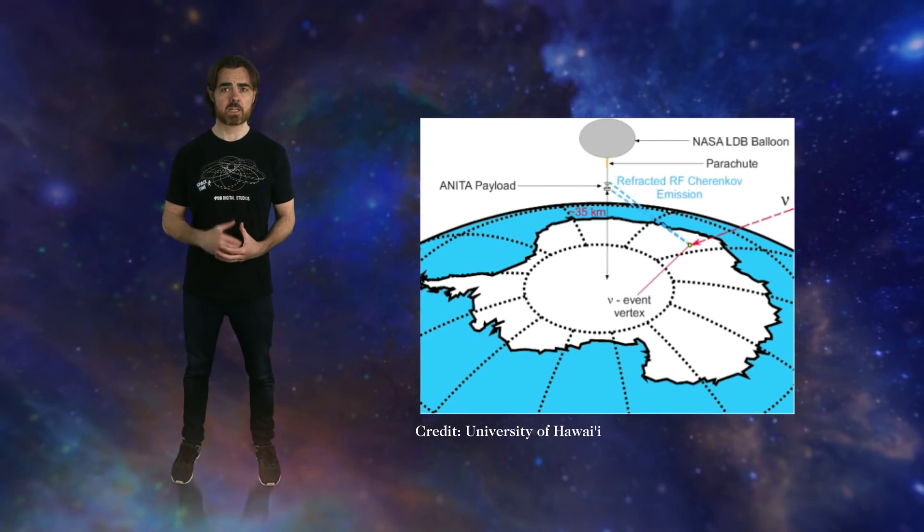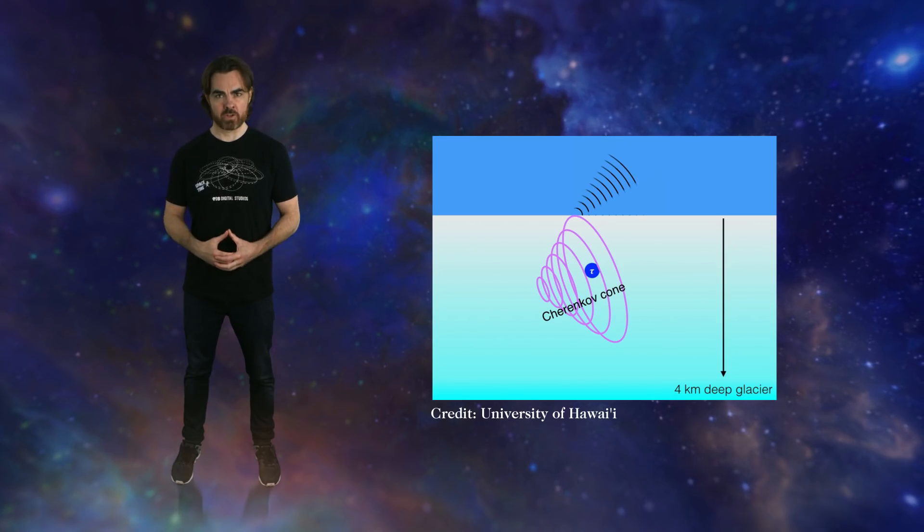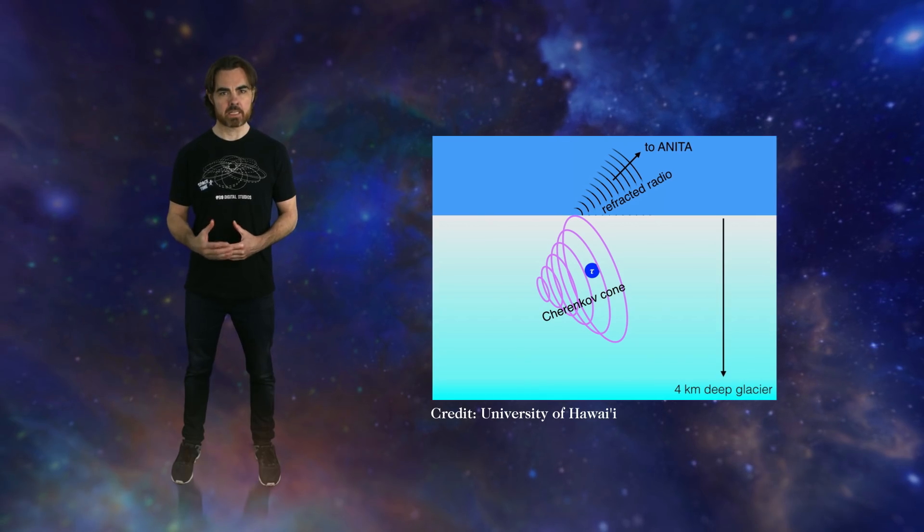ANITA works in a similar way, but it's focused on catching the very highest energy neutrinos, the ones that are produced by cosmic ray interactions with the CMB. In order to see those extremely rare neutrinos, ANITA scans not one cubic kilometer of ice, but 15 million square kilometers of Antarctic ice sheet. That's where the balloon comes in. ANITA is a cluster of radio antennae that hovers 37 kilometers above Antarctica. If an ultra-high energy neutrino decays in the ice anywhere within 700 kilometers of ANITA, the resulting radio frequency Cherenkov radiation can be seen by ANITA's antennae.